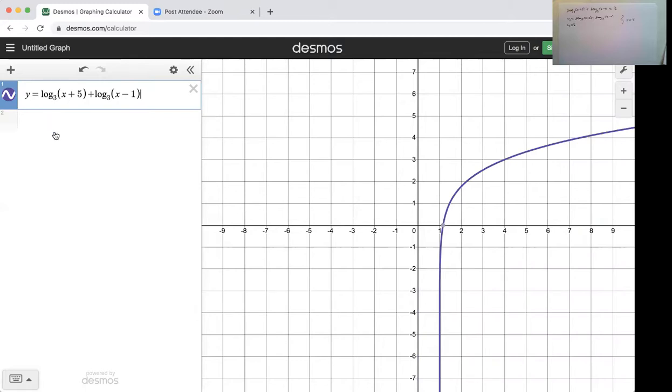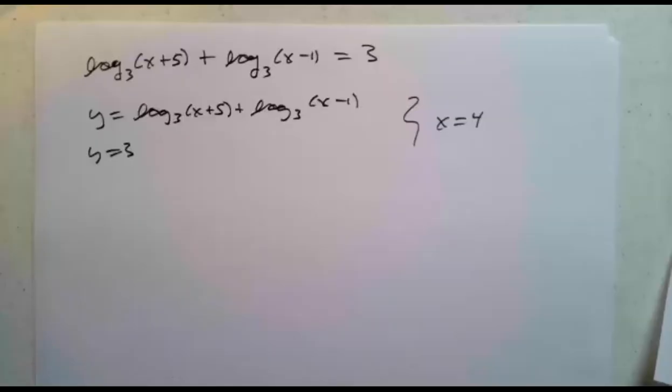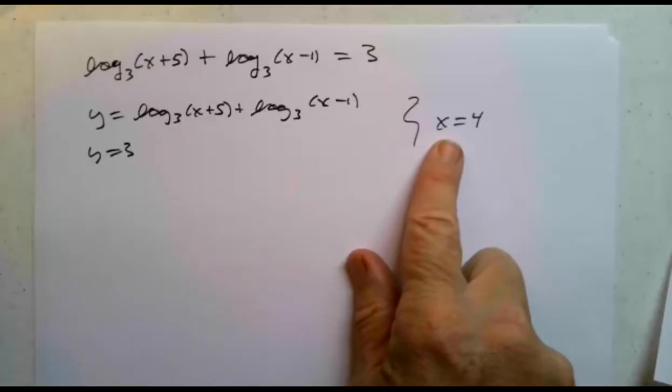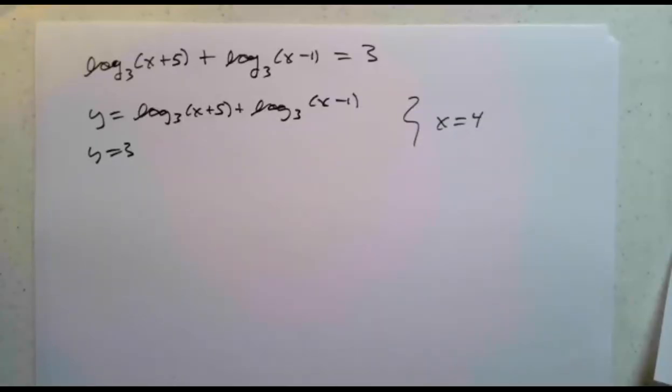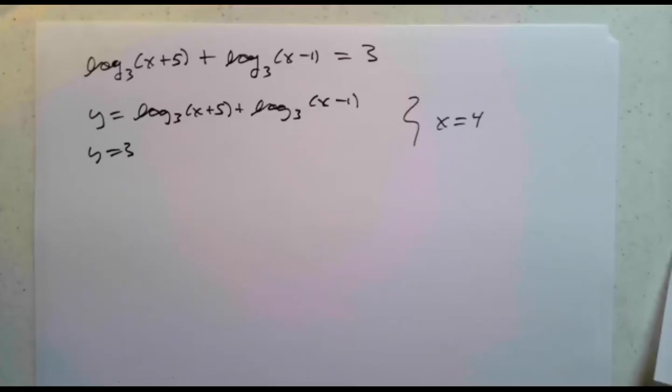That's my first equation, and I want to see when does that equal 3. And you can see it occurs at this point here, which is at 4, 3. What did I think was going to happen? I thought it was going to intersect at x equals 4. So this graph reinforces that notion that this function equals this function, log 3 of x plus 5 plus log 3 of x minus 1 equals 3 when x equals 4. We have checked our work.